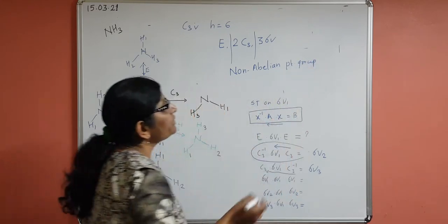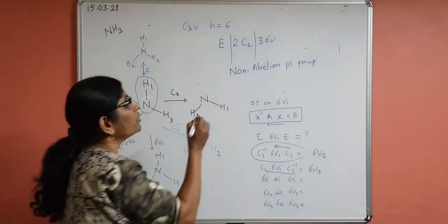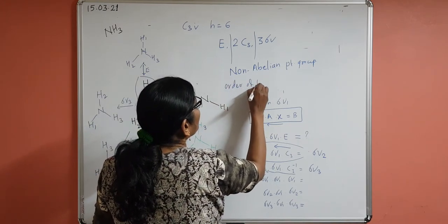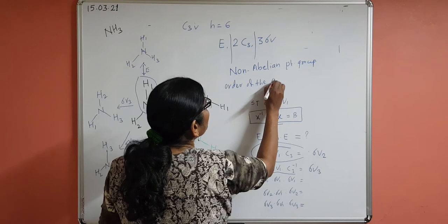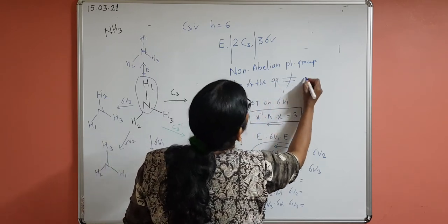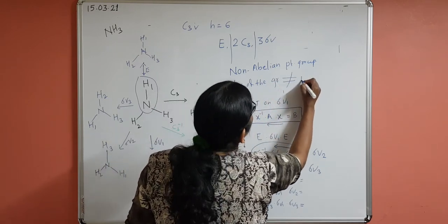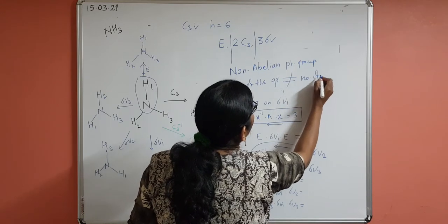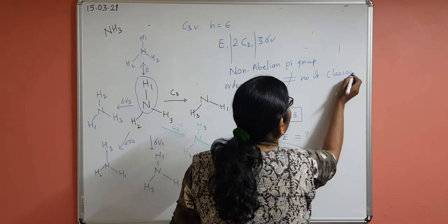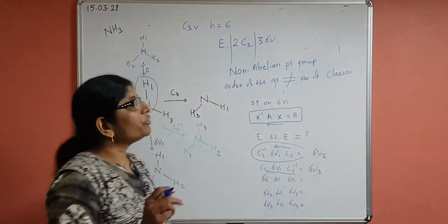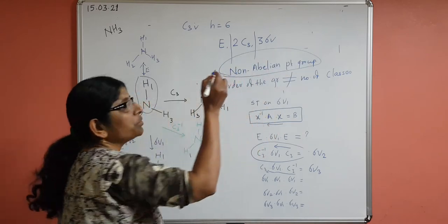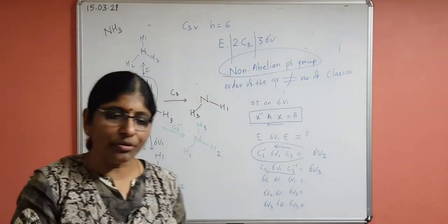Non-Abelian means that the order of the point group is NOT equal to the number of classes. For C3V, the order is 6 but the number of classes is only 3, confirming it is non-Abelian. In the next video we'll look at an Abelian point group.